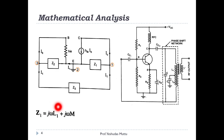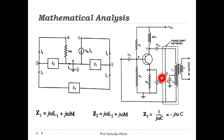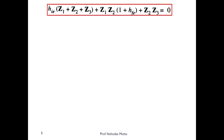We write Z1 = jωL1 + jωM, adding the mutual inductance term. Similarly, Z2 = jωL2 + jωM. Z3, corresponding to capacitor C, is written as 1/(jωC), which equals −j/(ωC). We begin the derivation by taking the generalized LC oscillator equation from the previous video and substituting for Z1, Z2, and Z3.